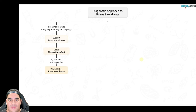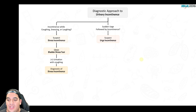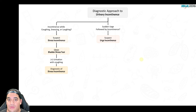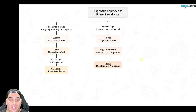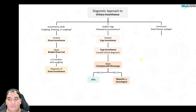A patient with a sudden urge followed by incontinence suggests urge incontinence. Determine the etiology: could be idiopathic, UTI, or neurological. First rule out a UTI — get a urinalysis with microscopy. If positive, it's likely a UTI; treat and reassess. If negative, consider neurological causes or idiopathic, which may require further workup.